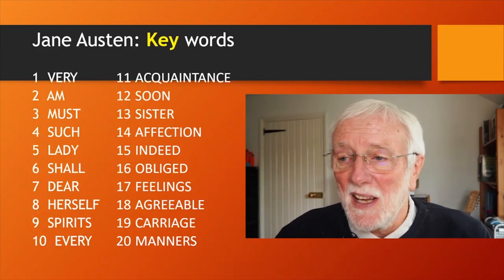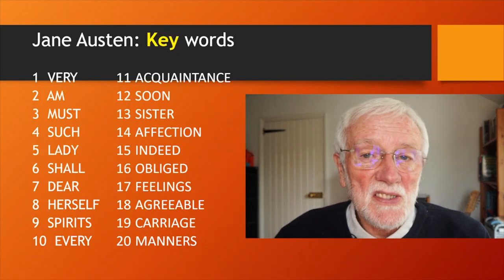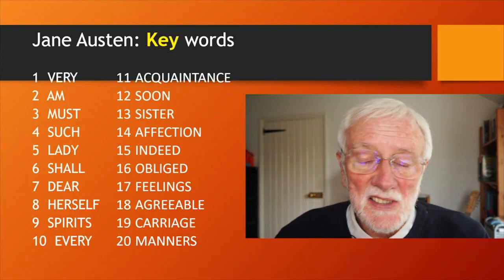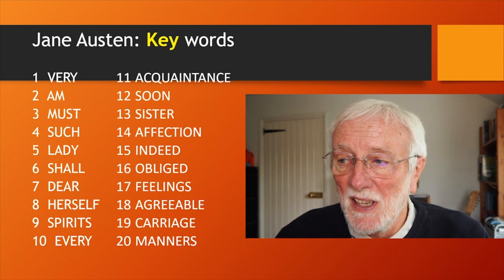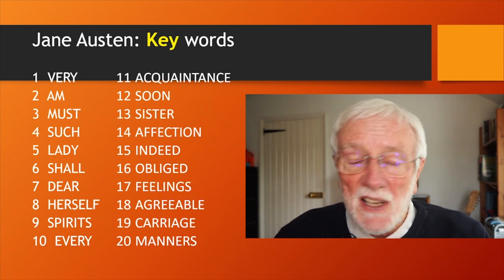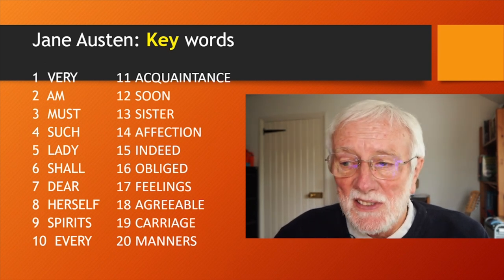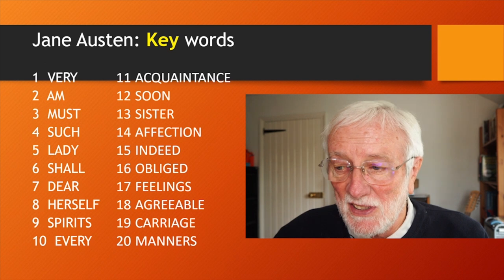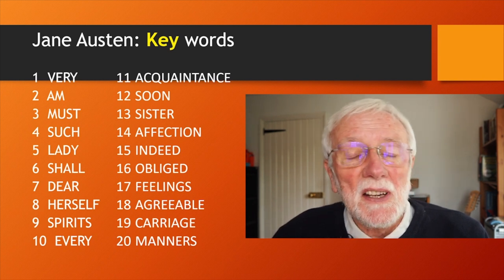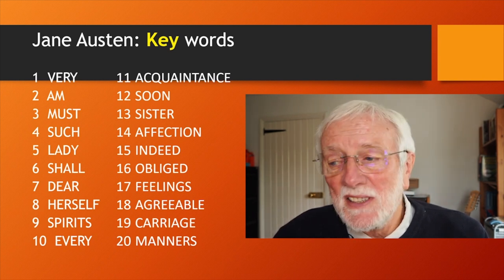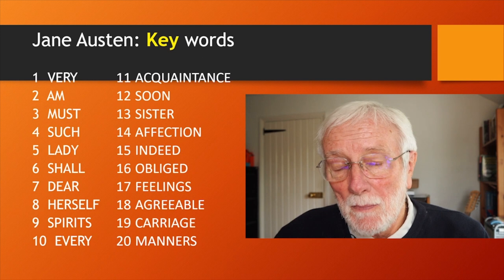When we look at a keyword list of Jane Austen's works we see something quite different: 'very,' 'am,' 'must,' 'such,' 'lady,' 'shall,' 'dear,' 'herself,' and so on. We are now coming down to full nouns and adjectives. And I was struck by number 18 there — the word 'agreeable.'